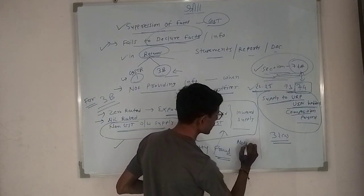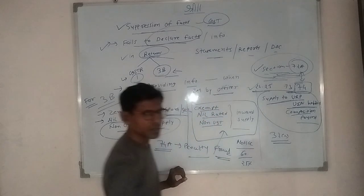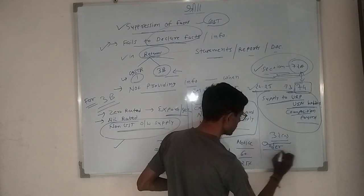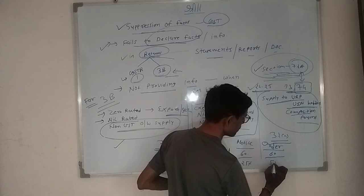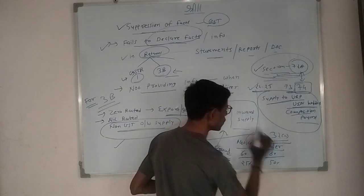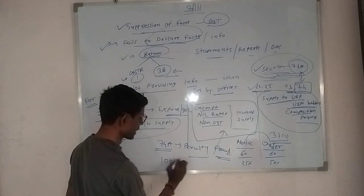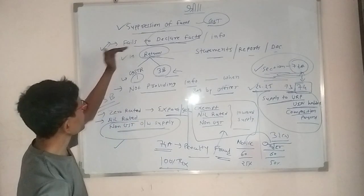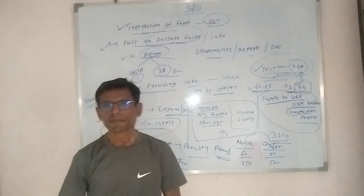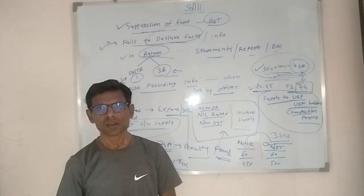If the department issues a notice and you make payment within 60 days of notice, the penalty will be 25% of tax. If you make payment within 60 days of the order being issued, the penalty will be 50% of tax. If you miss both these time limits, then penalty will be 100% of tax — in case of suppression of fact. I hope you understand what is the meaning of suppression of fact under GST and what are the consequences.